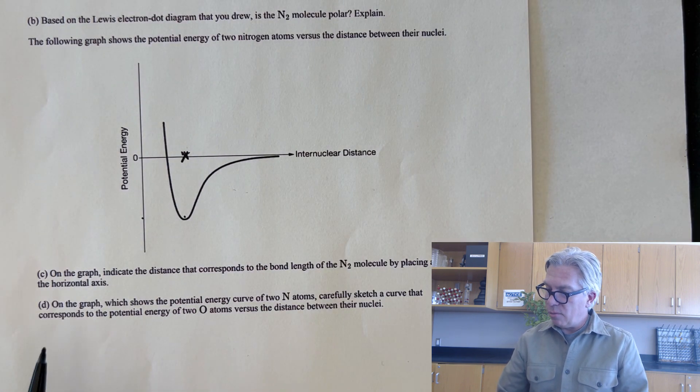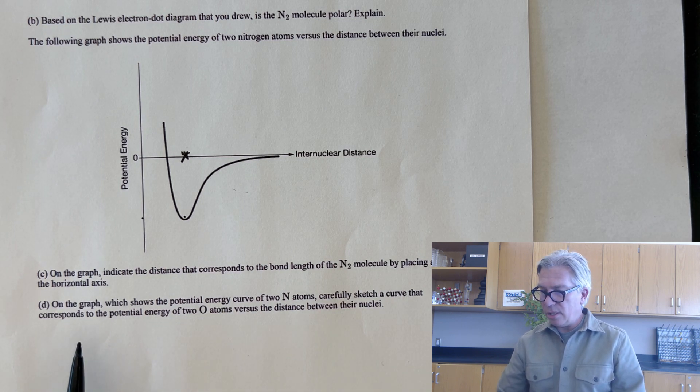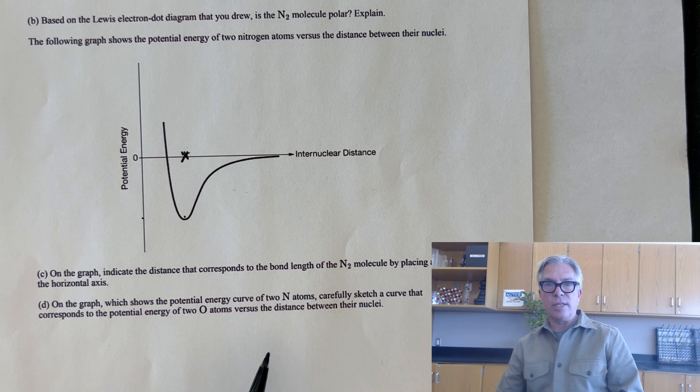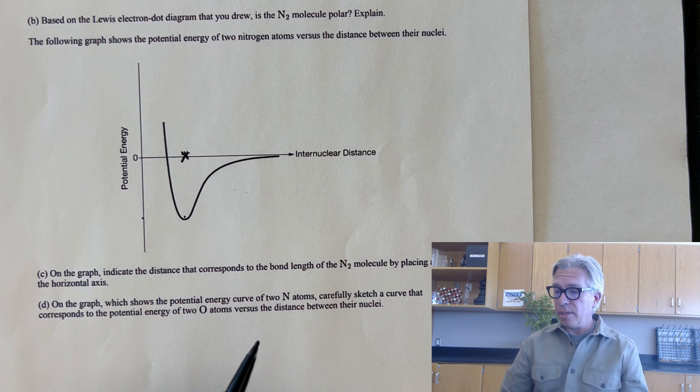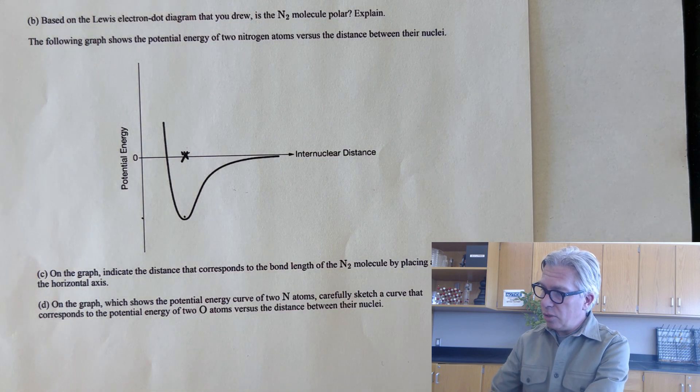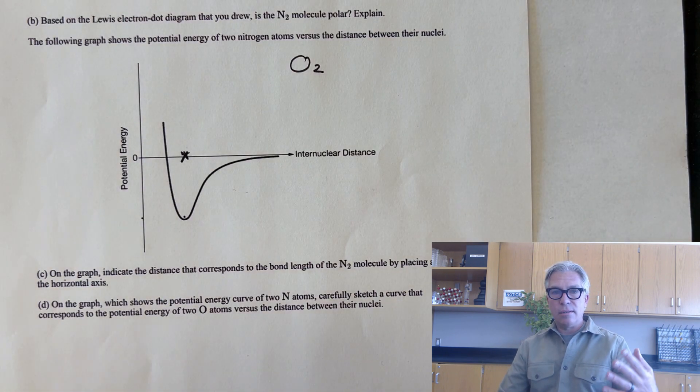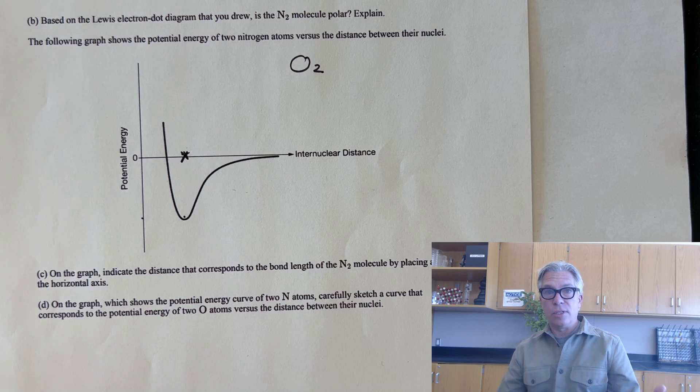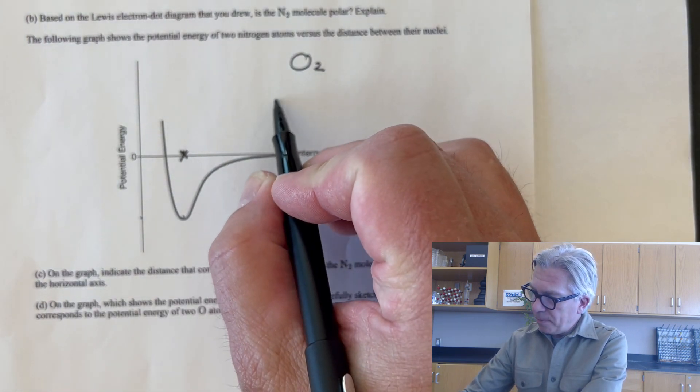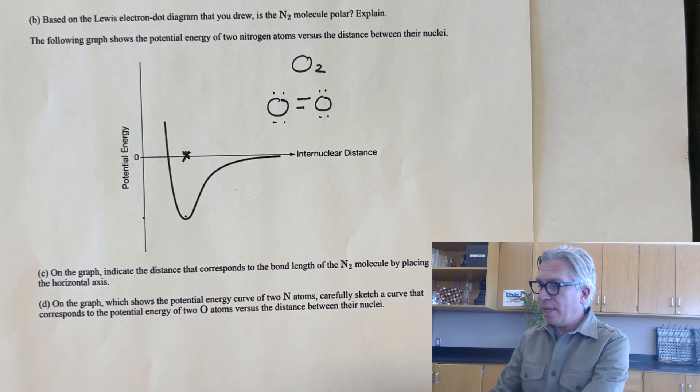This is the tough part. On the graph which shows the potential energy curve of two nitrogen atoms, carefully sketch a curve that corresponds to the potential energy of two oxygen atoms versus the distance between their nuclei. This is tricky. A lot of people have got this wrong. In order to get the correct sketch, we actually have to know something about O2. It's always good to draw the Lewis structure of molecules you're considering. We've already drawn nitrogen with a triple bond. If we draw the Lewis structure for oxygen, we find out that it actually has a double bond. That double bond is significant.